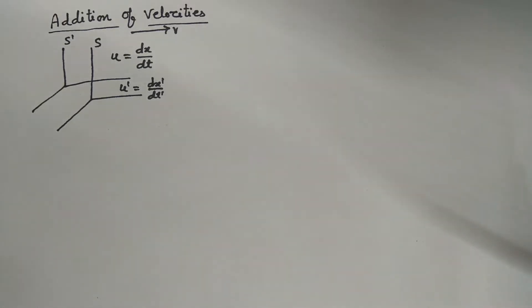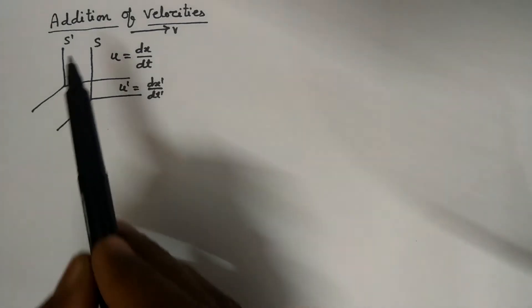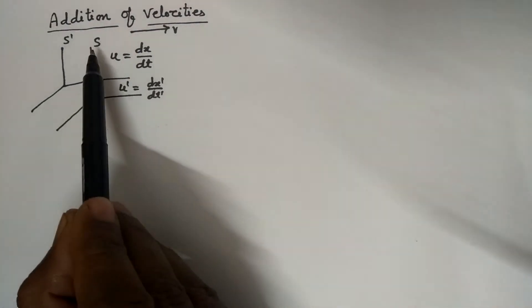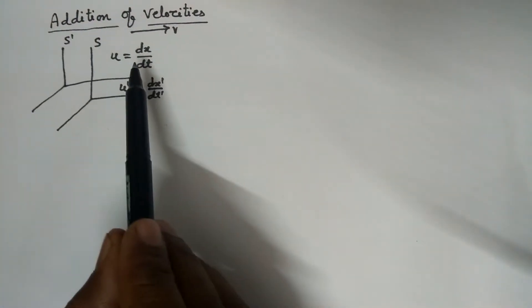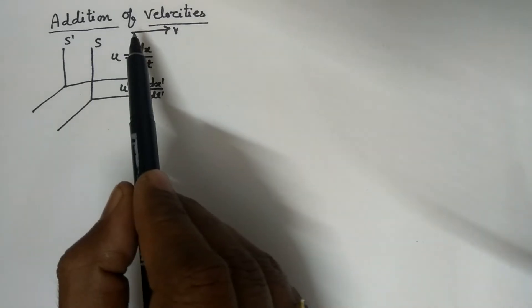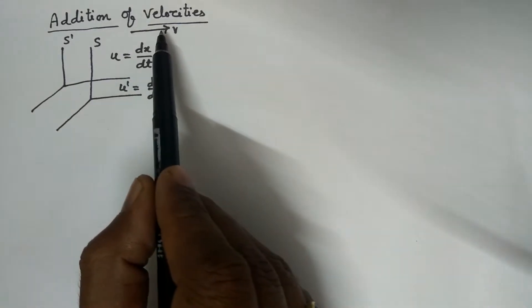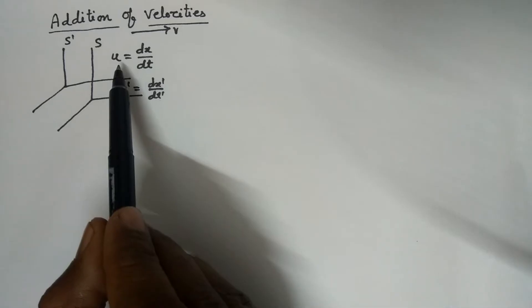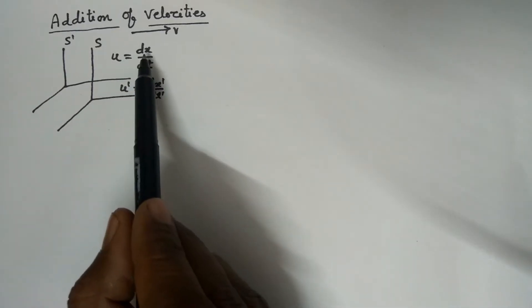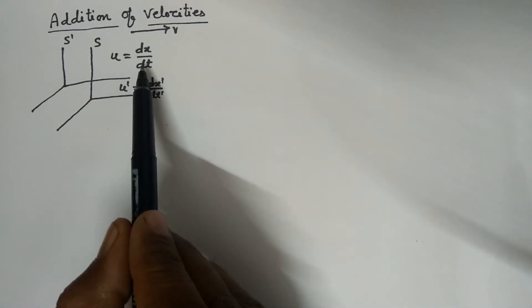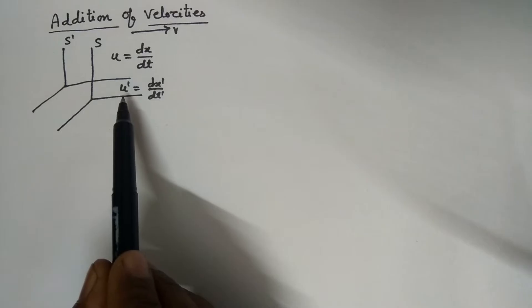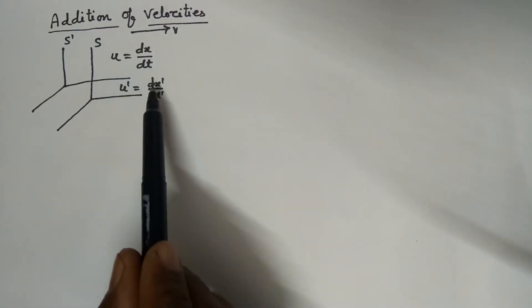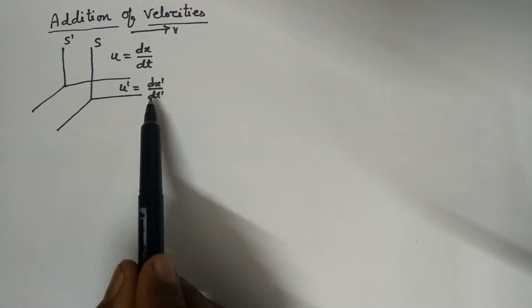Today I will teach addition of velocities in relativistic mechanics. Suppose there are two frames S and S-dash, and the relative velocity of both frames is V. U is the velocity of an object, equal to dx upon dt, and in frame S-dash, the velocity of the object is u-dash, equal to dx-dash upon dt-dash.